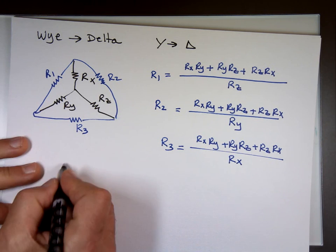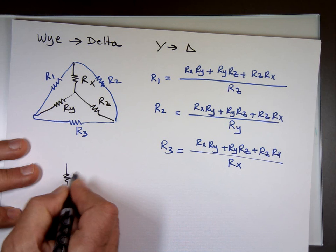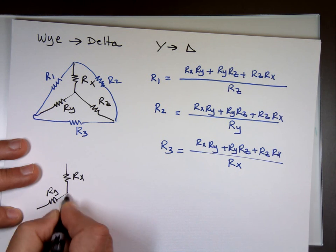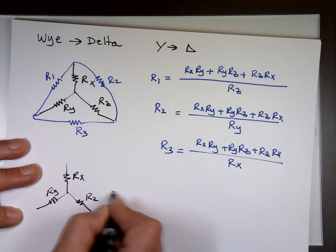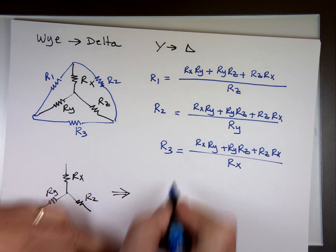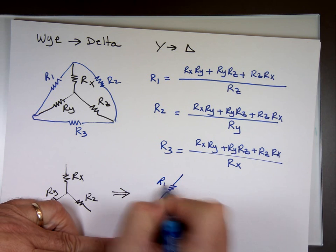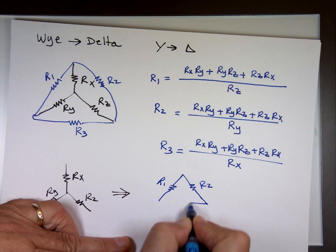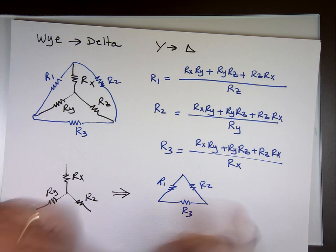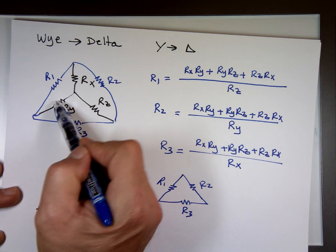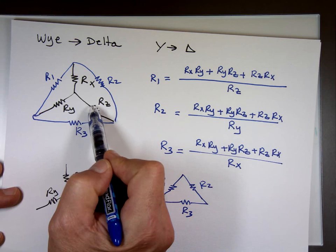So if we have this one, I can turn this to this one. I can turn this one to this one using these values. Again, the top for this, in case you missed it, this times this, plus this times this, plus this times that.